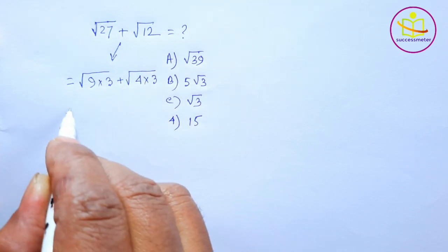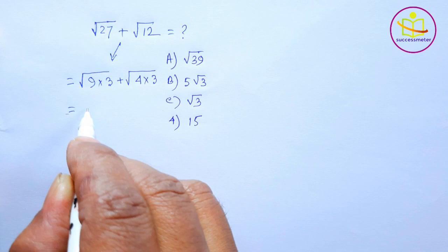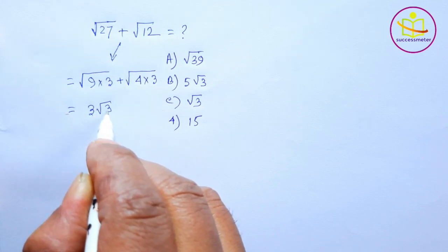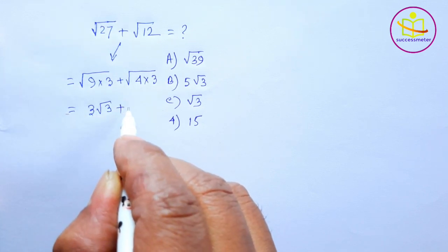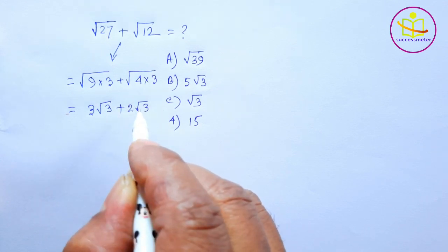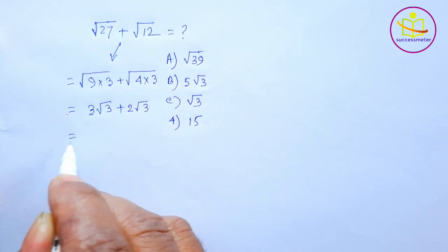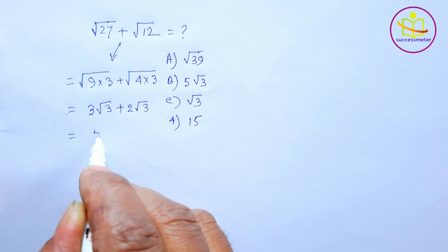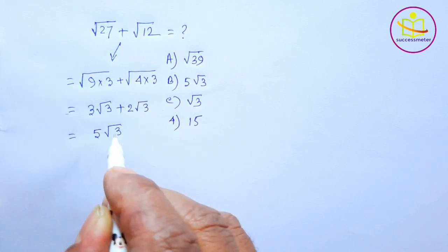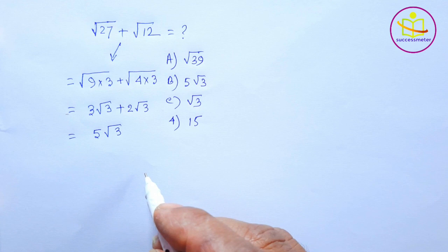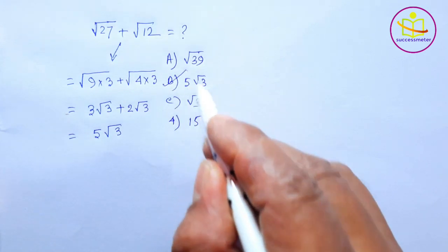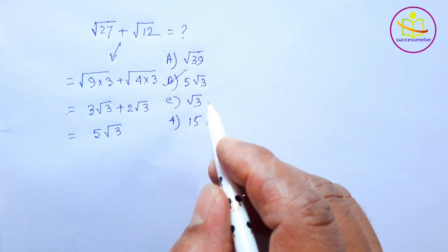This is equal to 3 square root 3 plus 2 square root 3, which is equal to 5 square root 3. So the correct option is B: 5 square root 3.